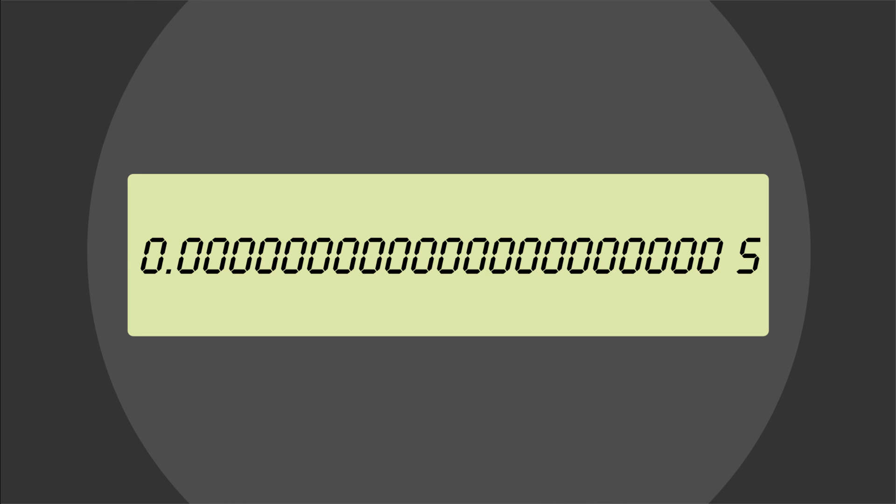Scientists recently measured the shortest time ever, 247 zeptoseconds, where a zeptosecond is one trillionth of a billionth of a second.